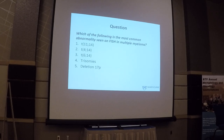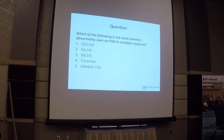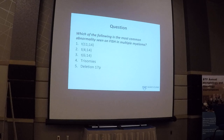What is the most common abnormality seen on FISH in multiple myeloma? The options include t(11;14), t(4;14), t(6;14), and trisomy of odd-numbered chromosomes, and deletion 17p. The correct answer is trisomy, seen in about 45% of patients with newly diagnosed multiple myeloma. t(11;14) is seen in about 15-20%, t(4;14) in about 15%, t(6;14) in about 2%, and 17p deletion at diagnosis is about 7%. The reason for raising these abnormalities is that the field is moving toward developing therapies targeted toward specific cytogenetic abnormalities.